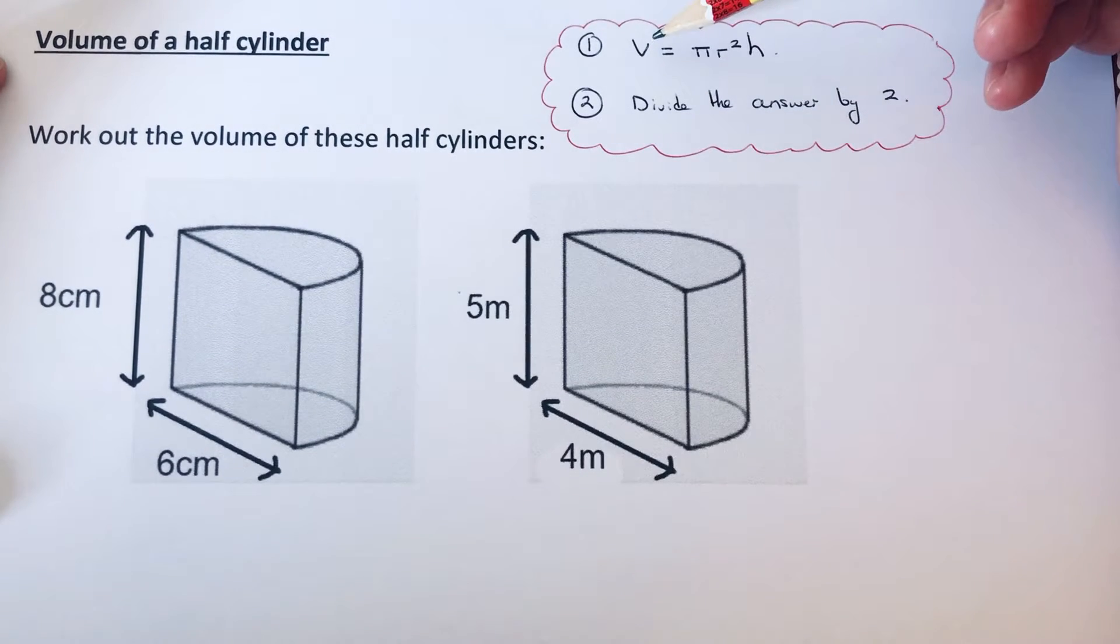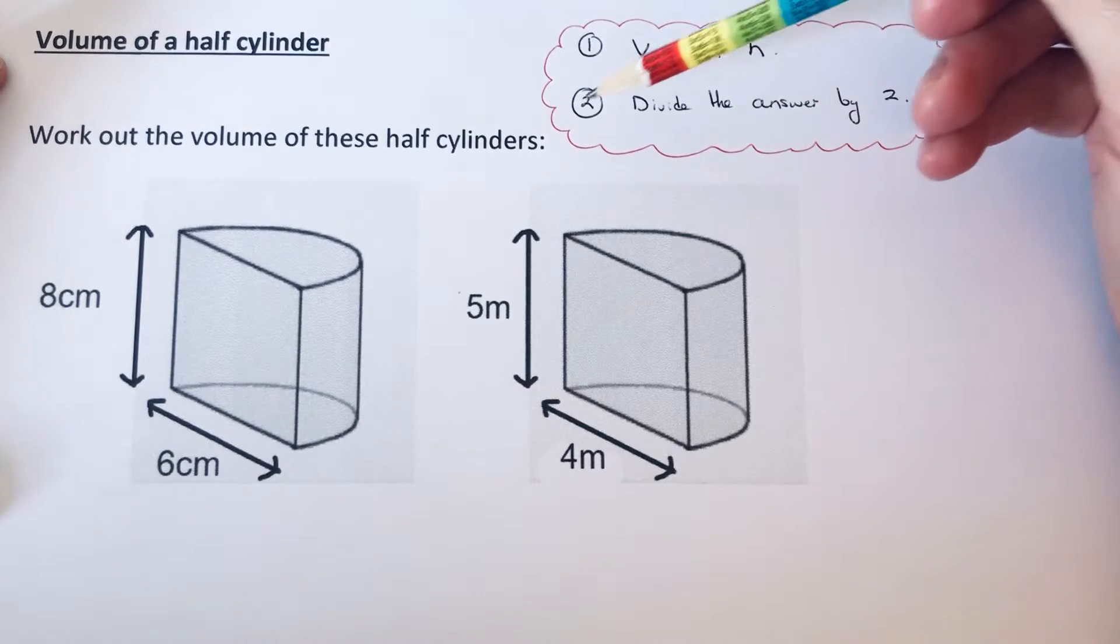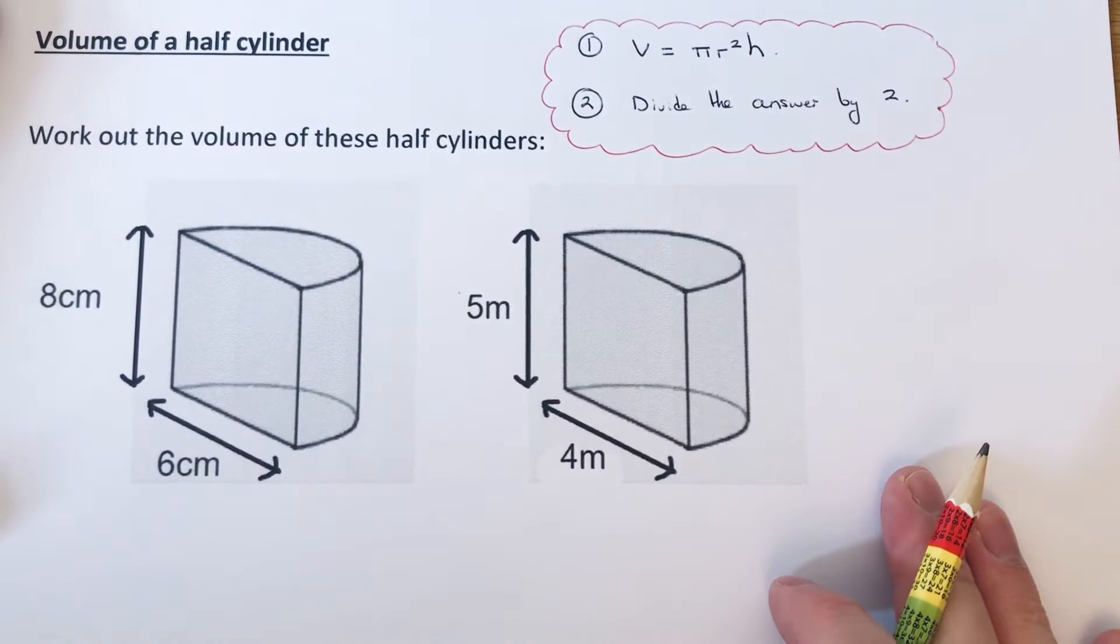The way you do this is to work out the volume of the full cylinder using the formula V = πr²h. V is the volume, r is the radius, and h is the height of the cylinder. Once you've done that, you can then divide the answer by 2.